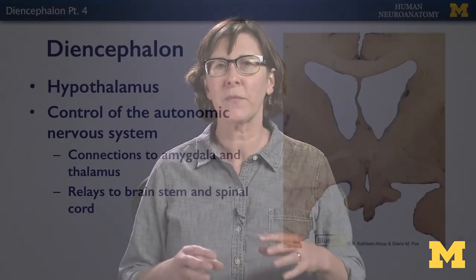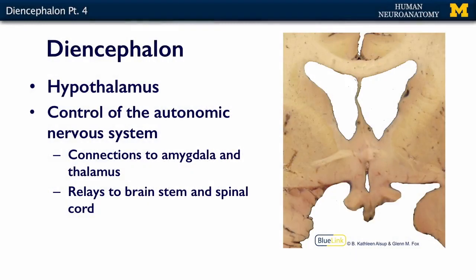The hypothalamus has important connections to the amygdala and the thalamus, and we'll talk about the amygdala in a separate lecture a little bit later. What I want you to know here is that the autonomic nervous system is controlled by the hypothalamus.